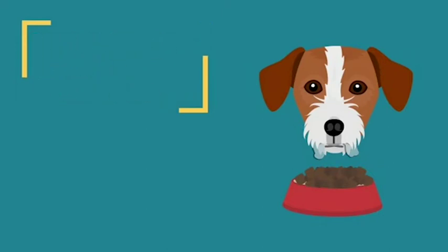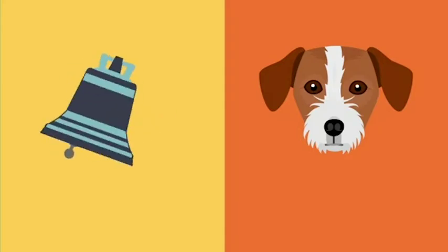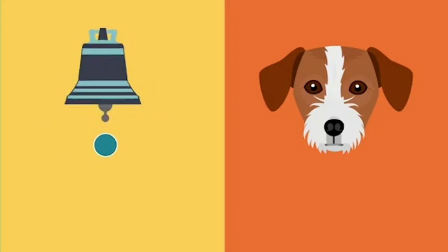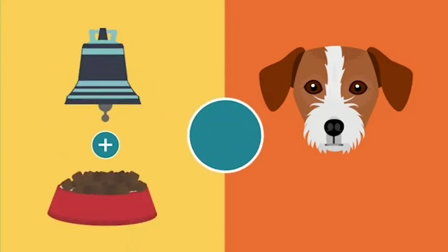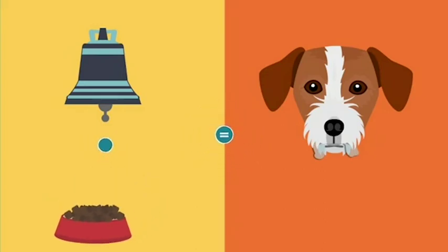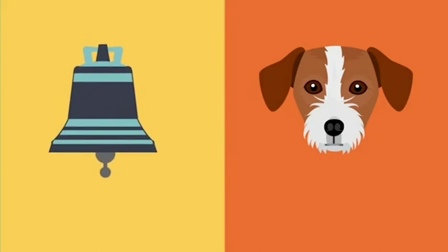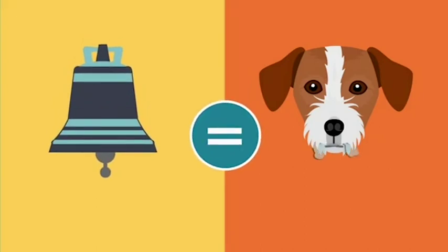Now came the interesting part. Before giving the dogs food, Pavlov would ring a bell. He rang a bell and then delivered food to the dogs, and he did this many times. After pairing these two stimuli together, he stopped delivering food. What he found was that the dogs now salivated to the sound of the bell, even in the absence of food.